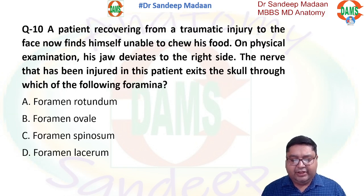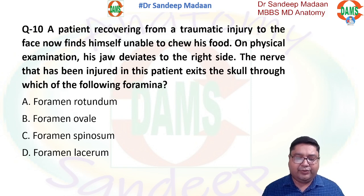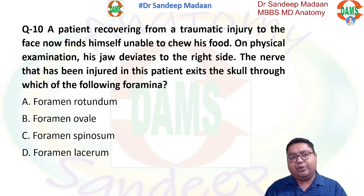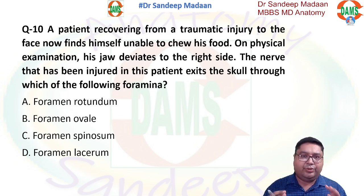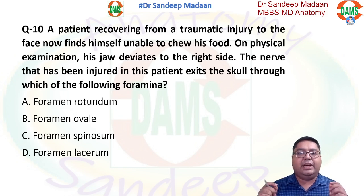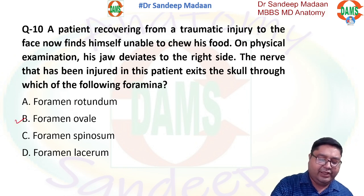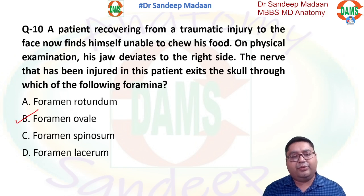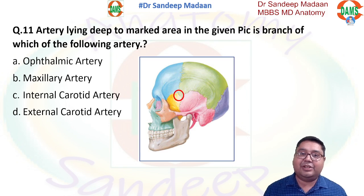A patient recovering from traumatic injury is unable to chew food, and the jaw is deviated. The motor deficit here is inability to chew — mastication is the problem. Mastication is performed by the muscles of mastication, which are supplied by the mandibular nerve. So the mandibular nerve is involved, and the mandibular nerve passes through foramen ovale — that is the answer.